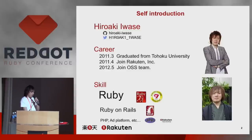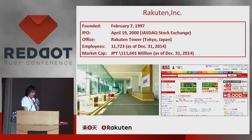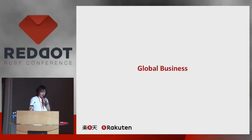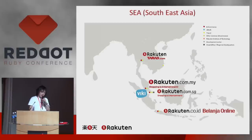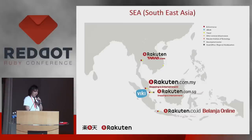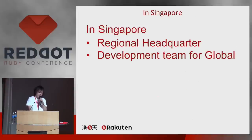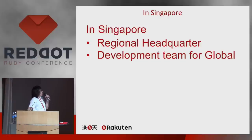Rakuten is a Japanese e-commerce company, and we have many global services all over the world. In the case of Southeast Asia, we have TARAT and BK and local EC businesses, specifically in Singapore. The Singapore branch is the regional headquarters, and we develop global services from Singapore.